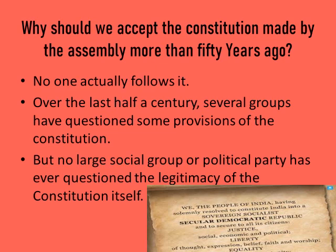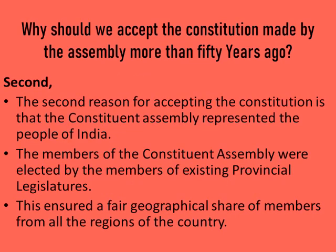Let us analyze the second reason: the constituent assembly represented the people of India. There was no universal adult franchise at that time. So who elected the members of the constituent assembly to draft the Constitution for India? They were elected by the members of the existing provincial legislatures. This ensured a fair geographical share of members from all the regions of the country.